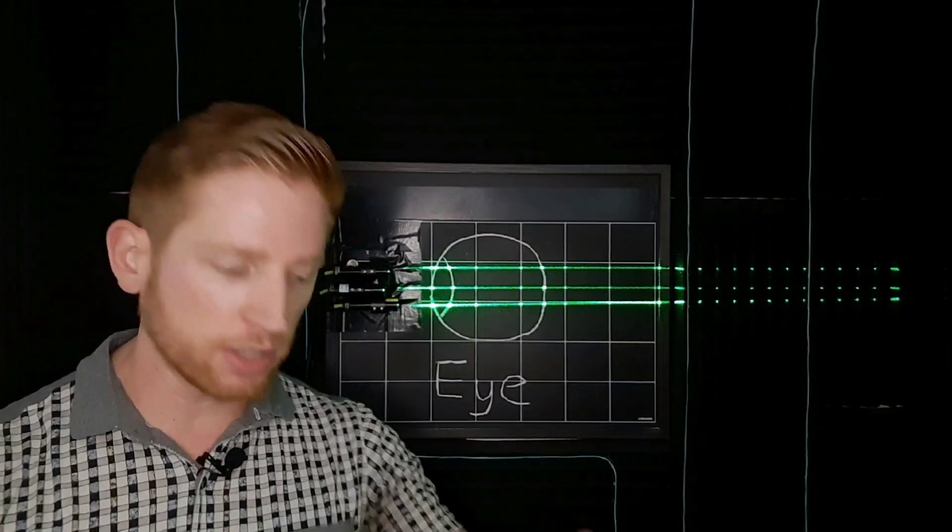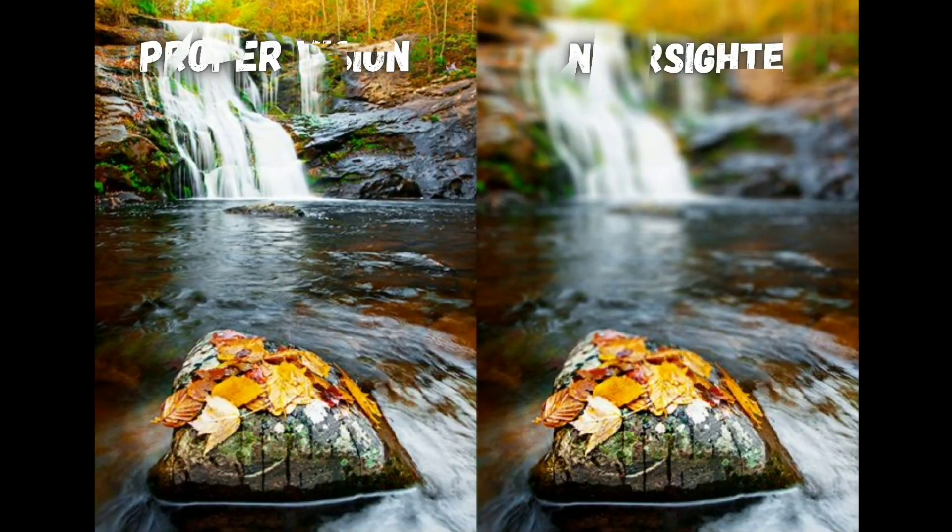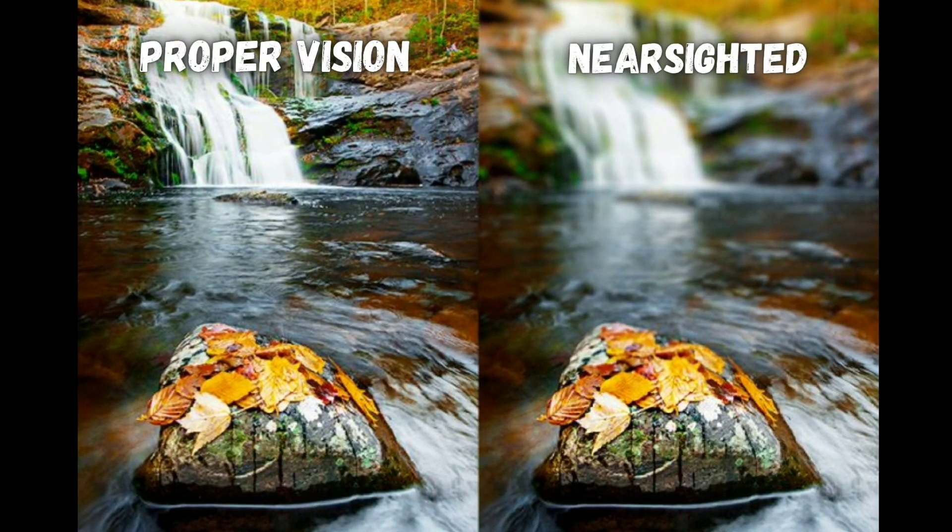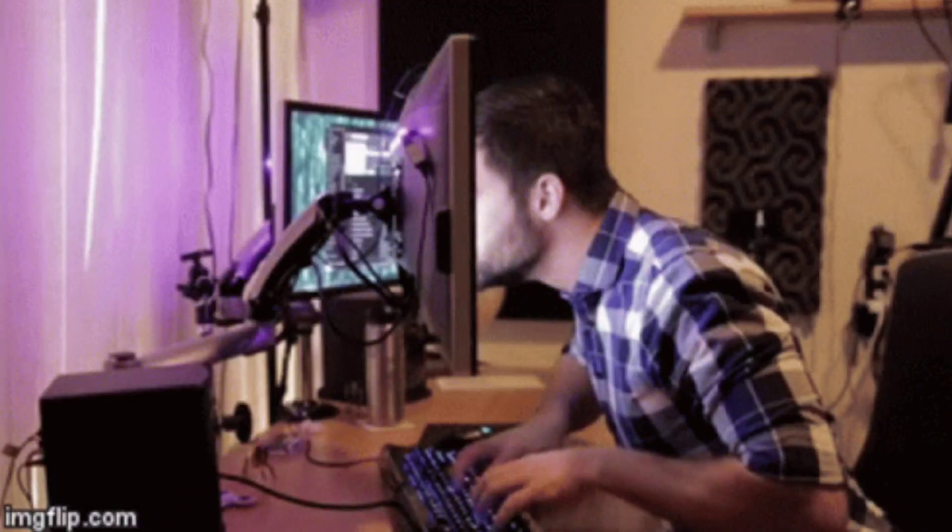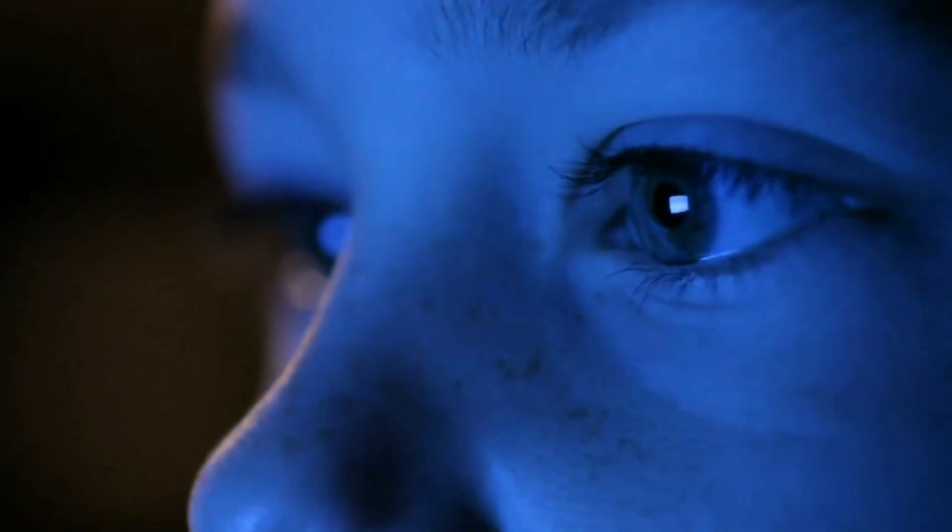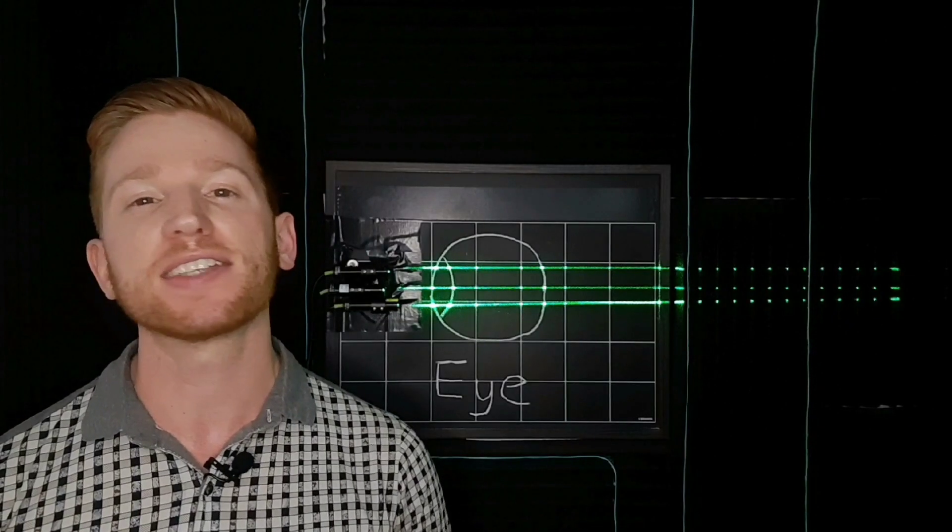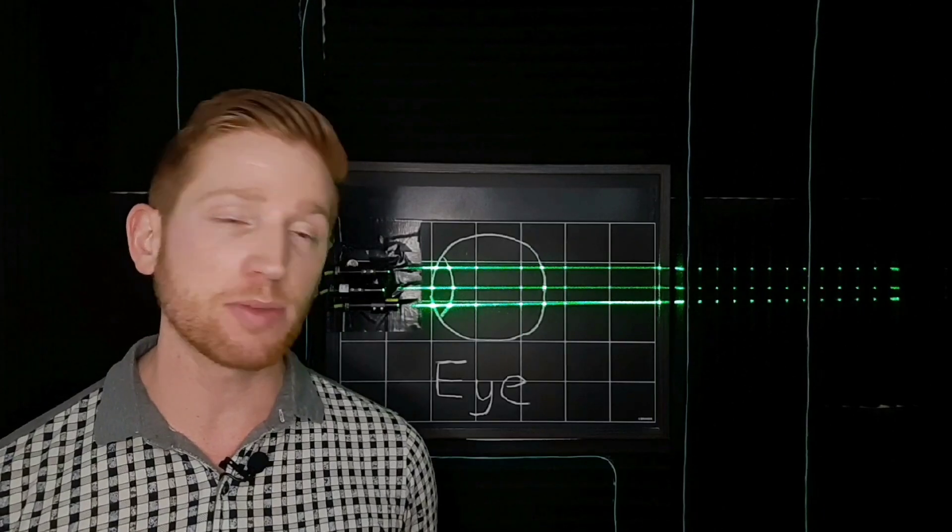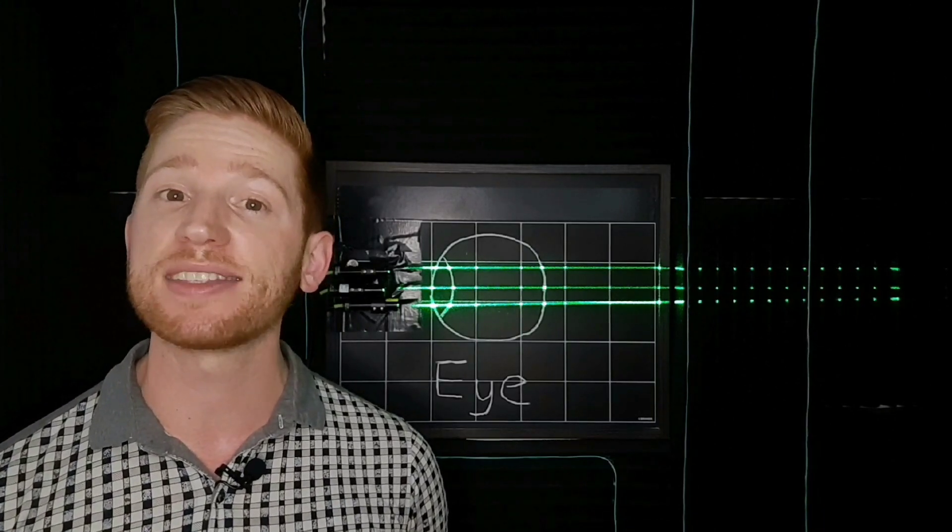If you're nearsighted, your eyes are better at looking at things up close. So things up close will be in focus while things further away will be more blurry. This can happen if you stare at screens or books very close to your face for a while. So there are actually increasing rates of nearsightedness because everybody spends so much more time looking at screens as kids.